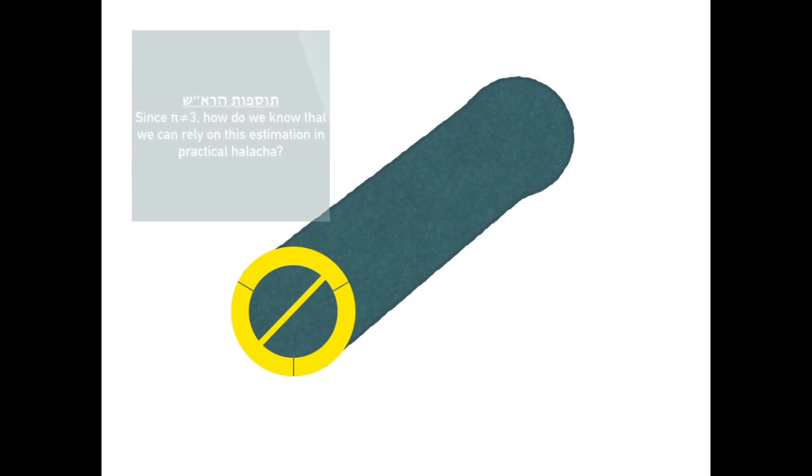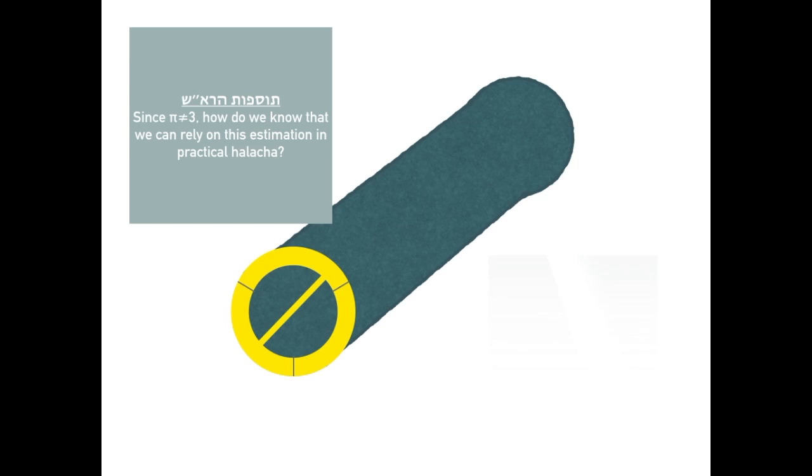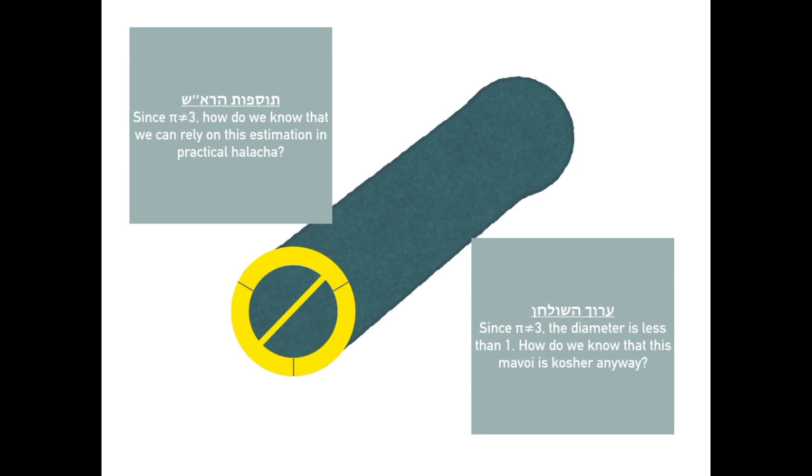The Tuz Zerosh explains that the focus is on the circumference. In Kolator Kula, how do we know that you can assume pi equals three? The Archa Shulchanan flips the question. The diameter is too short. A three Tefach circumference means that the Korah is less than one Tefach wide. How do we know that we can carry in this Mavoi anyway?